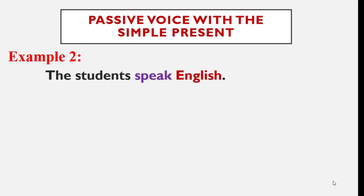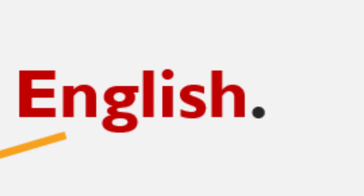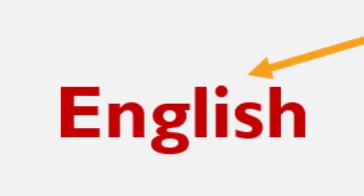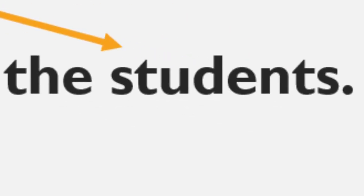Example number two: The students speak English. Again, English becomes the subject — it was the object in the active voice. The students, which was the subject, becomes the object in the passive voice. The verb is in the simple present, so verb to be must be in the simple present too. Be careful — speak is an irregular verb and its past participle is spoken. So the answer is: English is spoken by the students.